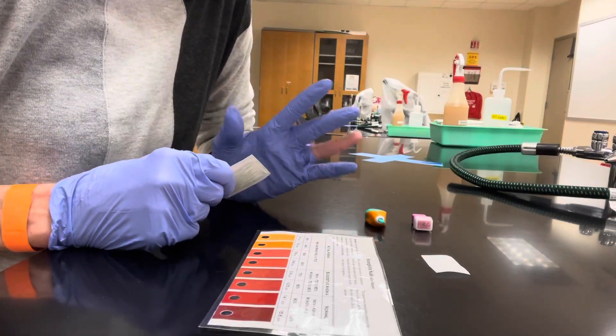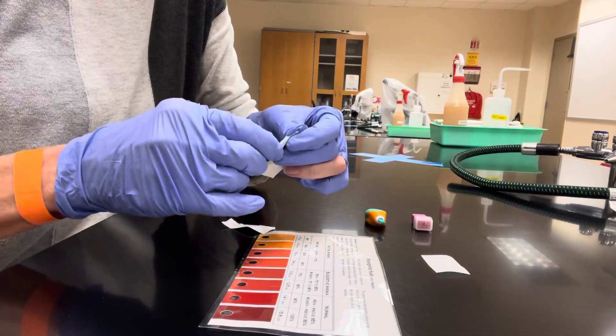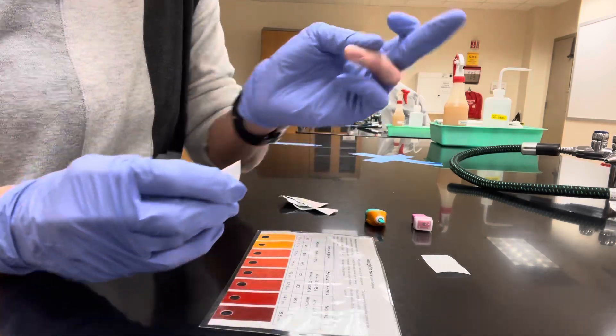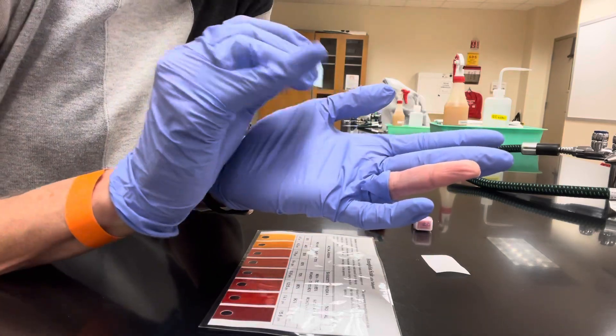Once you have your hand ready, take the alcohol towelette. You're going to clean the area that you're going to use the lancet on to get your drop of blood.